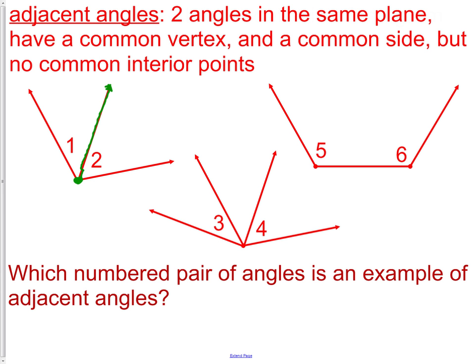As we look at the other two examples, angles three and four share a vertex. However, if I trace angle three and I trace angle four, they have no common side. In other words, as I trace those two angles, they never overlapped with the green rays.